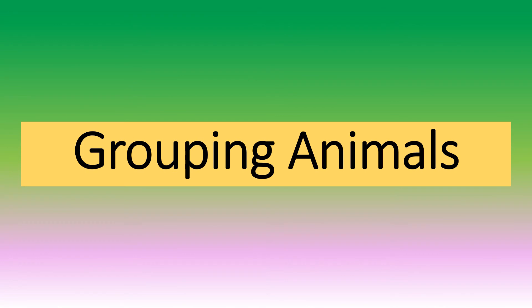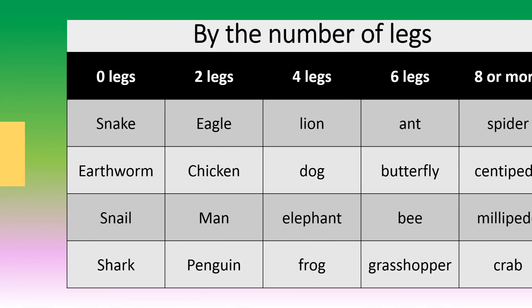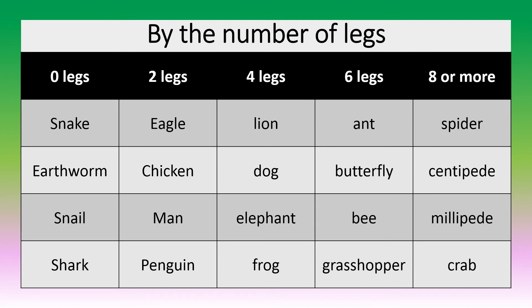Grouping of animals. Animals can be grouped in many different ways. One way is by the number of legs, just like what we see here in the chart. We have animals that have no legs, two legs, four legs, six legs, or animals with eight or more legs.